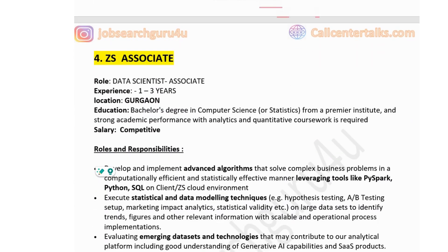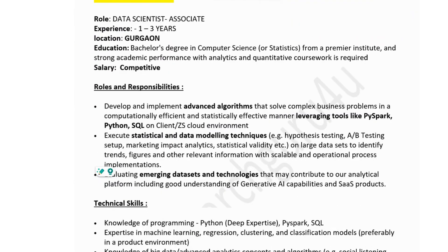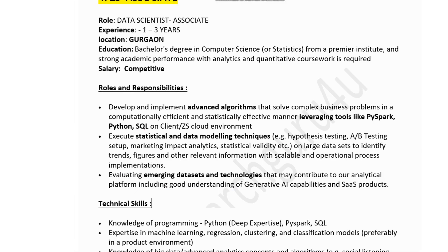The fourth job: company name is ZS Associates, hiring for a data scientist associate with one to three years of experience. Job location is in Gurgaon. Education: bachelor's degree in computer science from a premier institute with strong academic performance; analytics and quantitative coursework is required. Salary would be competitive. Key responsibilities include developing and implementing advanced algorithms to solve complex business problems in a computationally efficient and statistically effective manner, leveraging tools like PySpark, Python, and SQL on client cloud environments.